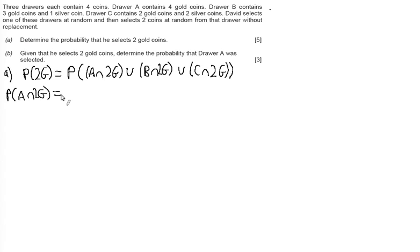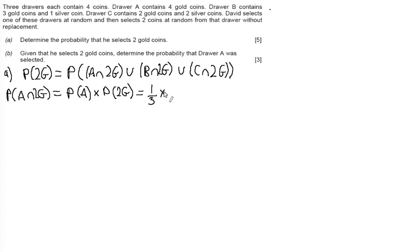These are independent events — the draw you pick is not affected by how you pick the gold coins, although there is conditional probability within the draw itself. So the probability of picking Draw A and two gold equals the probability of picking Draw A times the probability of picking two gold. The probability of picking Draw A is one third, and the probability of picking a gold coin first and second from Draw A is one each time, since all coins are gold.